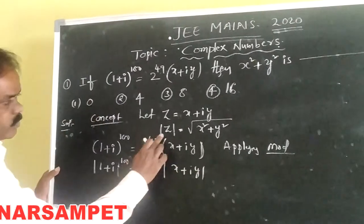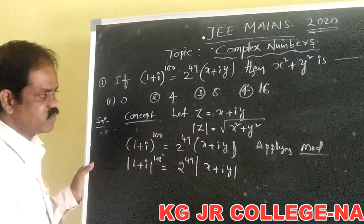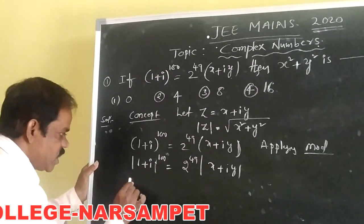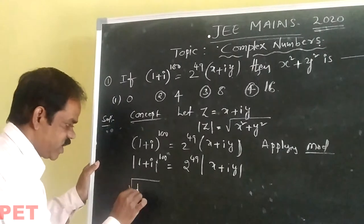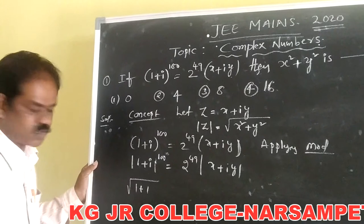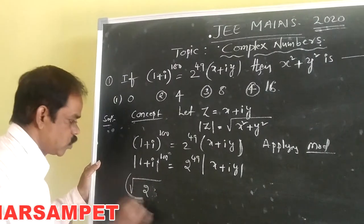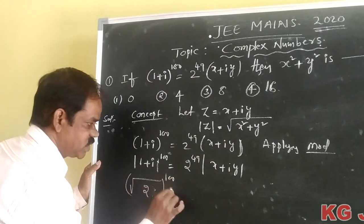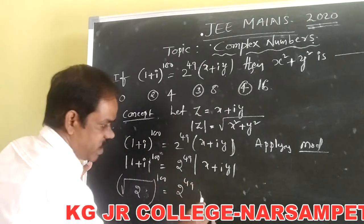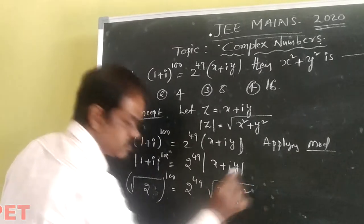The basic concept of modulus is: modulus of z equals the square root of x squared plus y squared. Applying here, the modulus of (1 + i) becomes the square root of 1 squared plus 1 squared, which is the square root of 2. So root 2 to the power of 100 equals 2 to the power of 49 times the square root of x squared plus y squared.